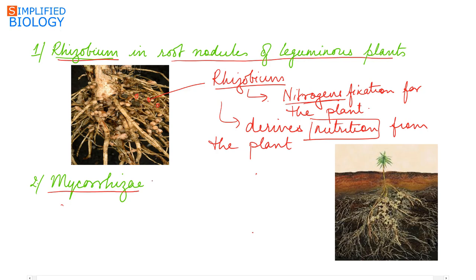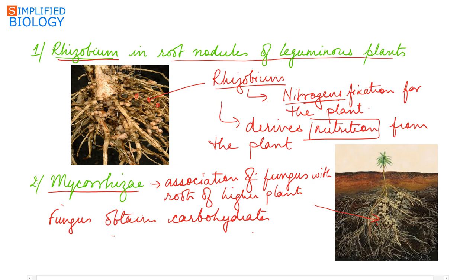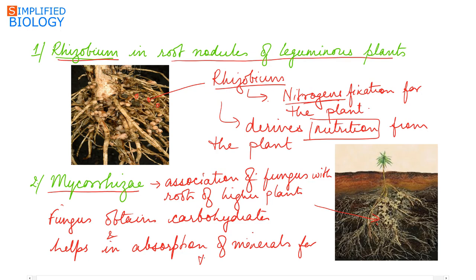The next example is mycorrhizae — the association of fungus with the roots of higher plants. The fungus obtains carbohydrates from the plant, and in return it helps in the absorption of minerals for the plant.